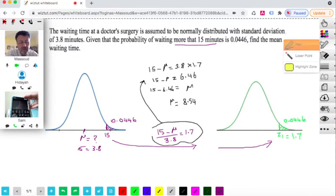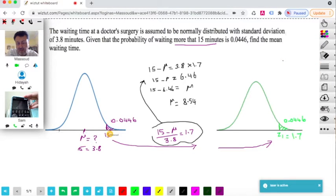It makes sense because if this is 15 and it's only a small percentage, so 15 could be, should be quite a bit away from the mean. And so the mean is 8.54.